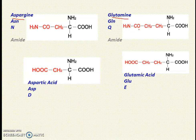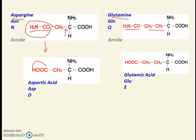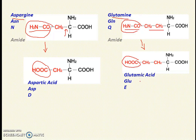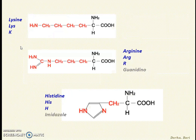Asparagine and glutamine are amide-group-containing amino acids — the CONH2 group is the amide group. Asparagine: CONH2–CH2–CH–NH2–COOH. Adding one CH2 gives glutamine with two CH2 groups. To write aspartic acid from asparagine, replace the amide group with a carboxyl group: CH2–COOH–CH–NH2–COOH. Similarly, replacing the amide group of glutamine with a carboxyl group gives glutamic acid. Aspartic acid and glutamic acid are acidic amino acids.